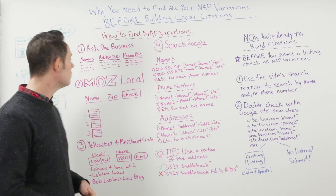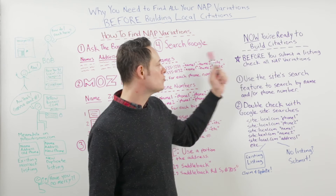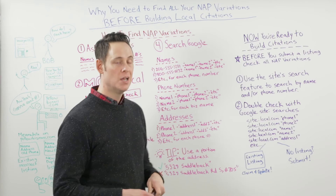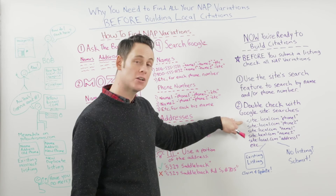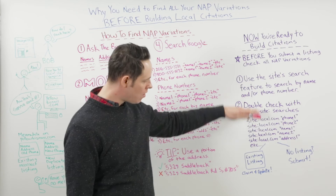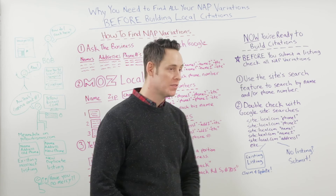At the end of this process you should have a clean list of all your various names, addresses, and phone numbers. Now you're ready to build citations. All you have to do is make sure you check all NAP variations on a site before you submit a listing. There are two ways: one, use the site's search feature to search by name and/or phone number, running all those variations. But you can't always rely on this — some sites have a poor search feature — so always double-check with Google searches using the site colon operator. For example: 'site:local.com' followed by the phone number or name in quotes. Go through all variations, and if you find a listing, claim and update it. If you don't, you're clear to submit — creating citations without worrying about duplicate listings.